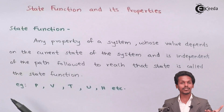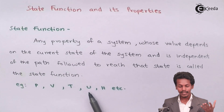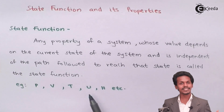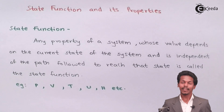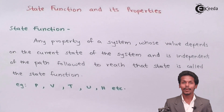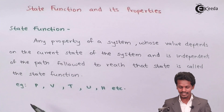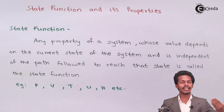Let me give you a short example. Pressure, volume, temperature — U stands for internal energy and H stands for enthalpy. All of these are basically state functions, which means they depend on the initial state and the final state of a particular system. These are properties that depend on the initial state and the final state.